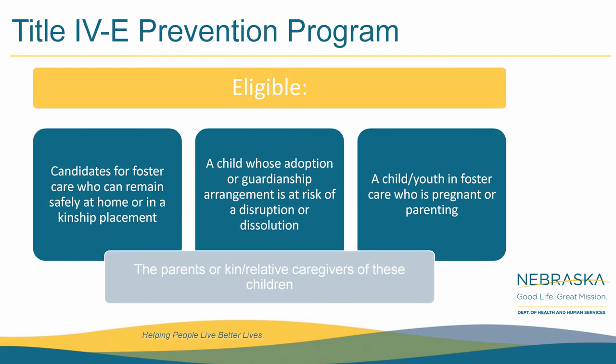Each state, according to FFPSA, is tasked with establishing their own definition of candidacy. A youth may be eligible for services under FFPSA if they are at risk of their adoption or guardianship dissolving, and/or if a youth in foster care is pregnant or parenting. Nebraska has proposed their own definition of candidacy, found in our draft-submitted five-year plan, which you can locate in the pod above. I want to emphasize that the prevention plan can encompass both court-involved and non-court cases. If it is a court-involved case, the child must not be placed in a formal foster care setting.